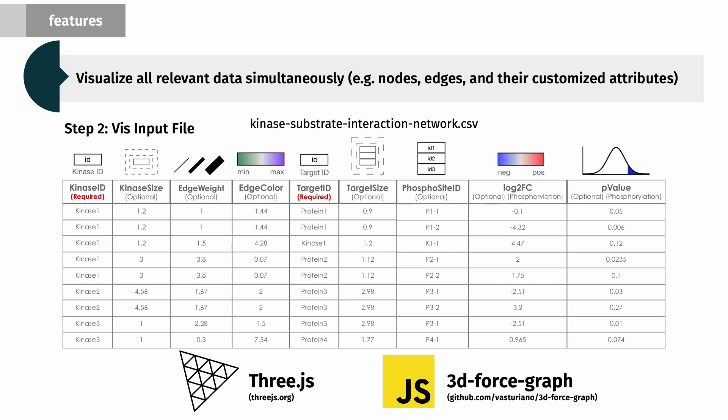Once we infer kinases, then we can go to step 2 and visualize all relevant network data simultaneously. These would include nodes, edges, and their customized attributes. For attributes, we can change kinase size, edge weight, edge color, target protein size, phosphosite IDs, log twofold change, and p-values. For the network visualizations, we have implemented these in 3GS and 3D force graph.